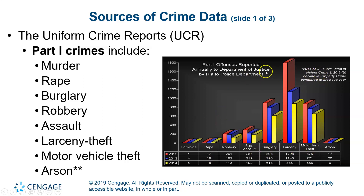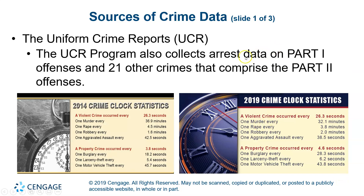Here is a chart showing Rialto's 2012, 2013, and 2014 data — homicides, rapes, robberies — and you can see how some crime was actually going down a little bit. This is what you report every single year. The UCR program also collects arrest data on part one offenses and 21 other crimes that comprise the part two offenses, but your focus is typically going to be these part one crimes — your violent crimes and your property crimes.